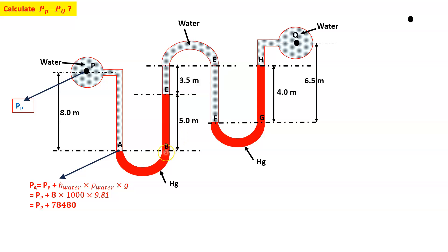Now drawing a horizontal line through points A and V — since PA and PV are on the same horizontal line in the same fluid, pressure will be equal. So PA = PV, and therefore PV = PP + 78480.